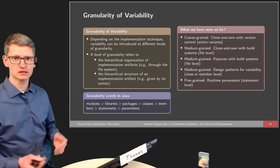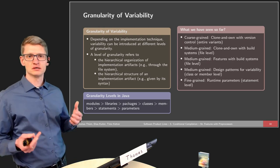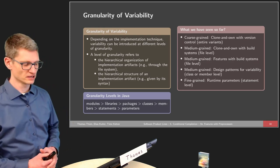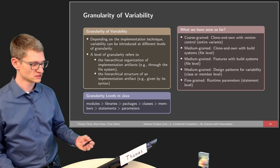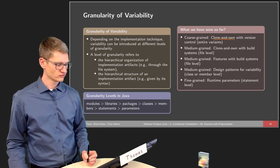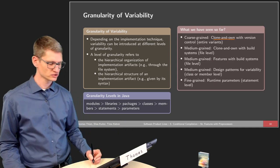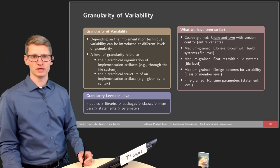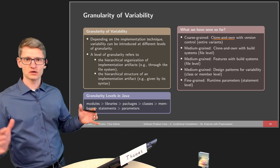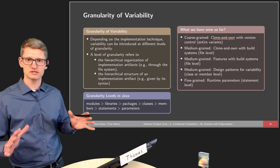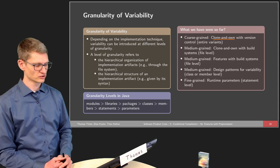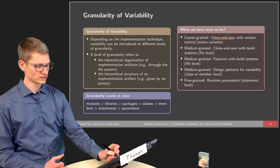Looking at what we've seen so far, different techniques support different kinds of granularity. Clone and own — whether via version control or not — provides coarse-grained variability: we can only clone and adapt complete variants. We always need to take all the artifacts that make up a project and create a new clone. This is very coarse-grained variability.